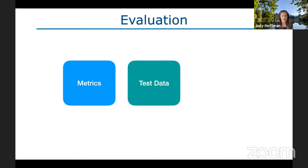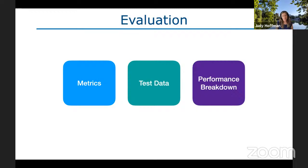The talk has three parts. First, understanding what a big complicated summary metric tells us when comparing approaches across datasets and architectures. Second, examining the critical assumption that test data is drawn from the same distribution as training data. Third, thinking beyond aggregate performance to consider the breakdown of performance within a dataset, and how that might vary for different subsets of our data.